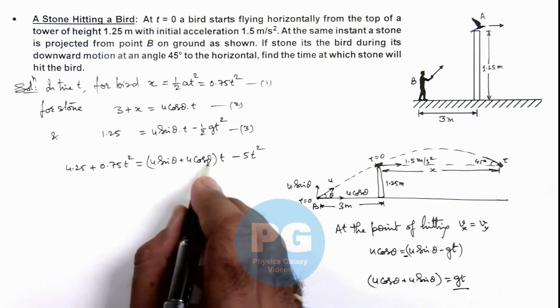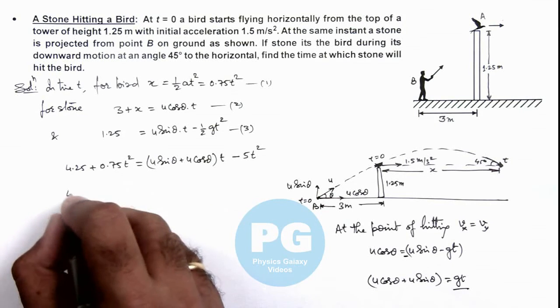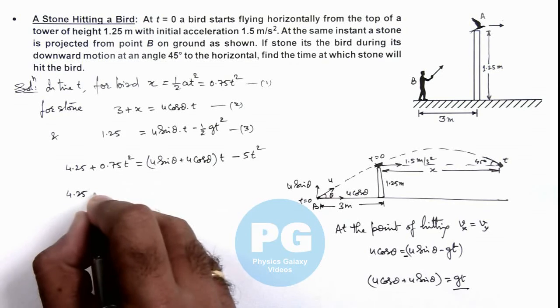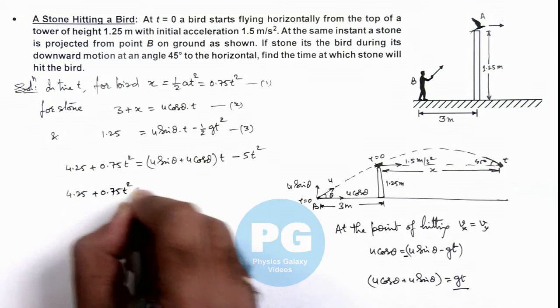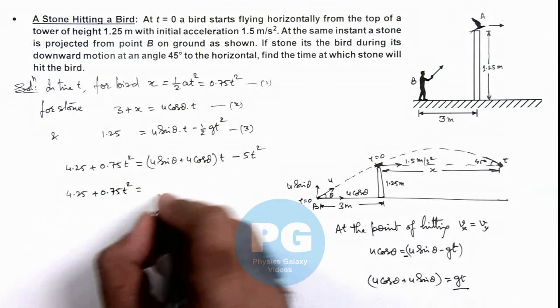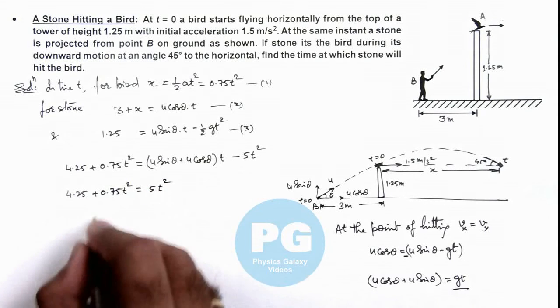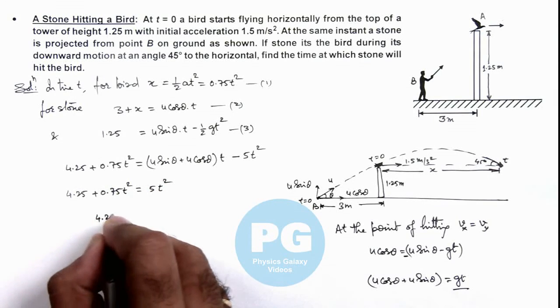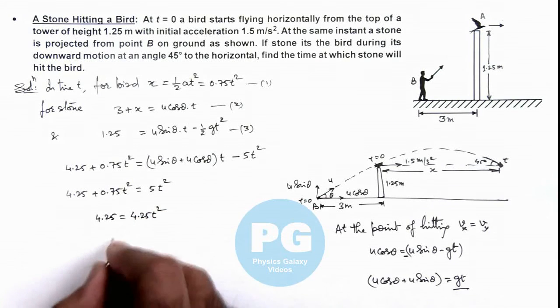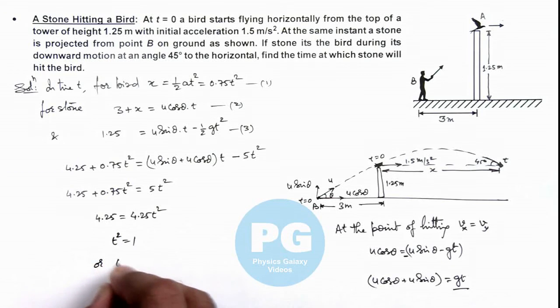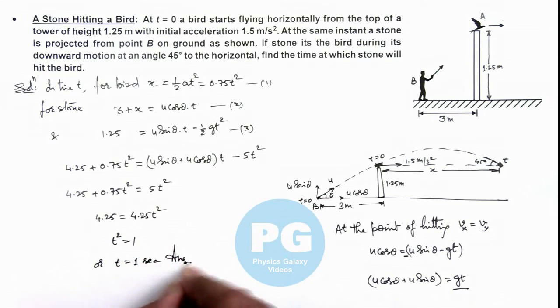4.25 plus 0.75 t square equals 10 t square minus 5 t square, which is 5 t square. This becomes 4.25 equals 4.25 t square. On further simplifying, we get t square equals 1, or we can write the value of t is 1 second. That is the final result of this problem.